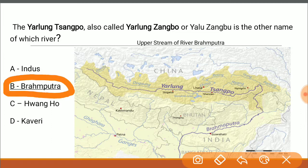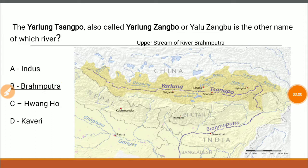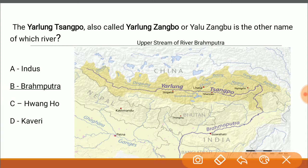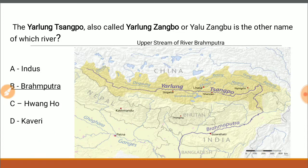When the Yarlung Tsangpo makes its way into Indian territory, it is called the Brahmaputra. Some additional things to know: it is a transboundary river, meaning it crosses the boundary of China — which has claimed the Tibet Autonomous Region — and gets into India. It has its origin near the Mansarovar Lake region and makes its way to the Bay of Bengal where it joins the sea.